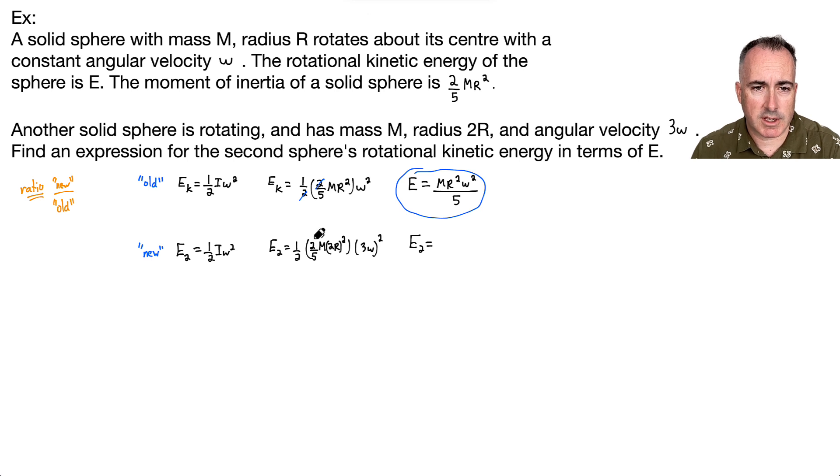I can start simplifying. E2 equals - the 2s cancel out. I've got to open this up. On the top I've got 2 squared, which gives me 4 and an R squared. And 3 squared, which is 9 times omega squared. All that is over 5. So E2 equals what's 4 times 9? That's 36. So that equals 36 M R squared omega squared all over 5.